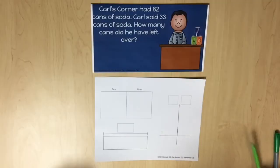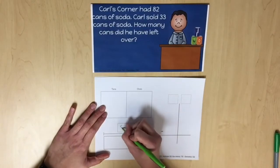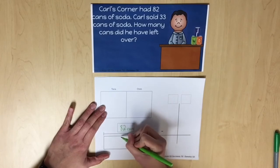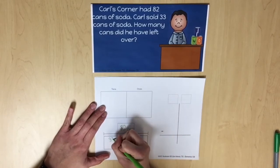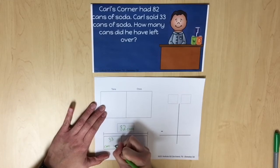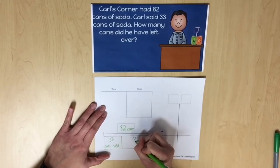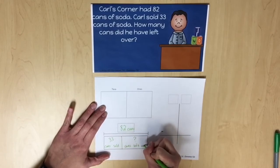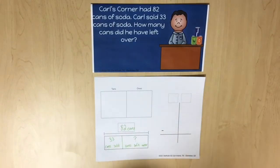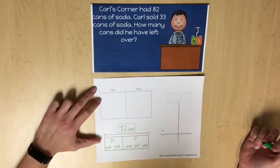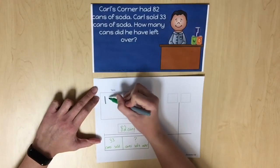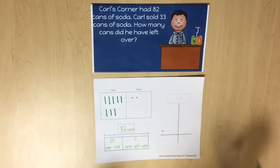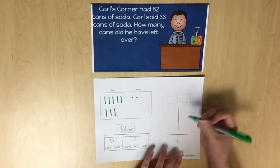First, the knowns and unknowns should be represented in the strip diagram. We know Carl started with 82 cans, he sold 33 cans, and we're trying to determine the number of cans he had left over. The starting amount of 82 should be represented on the place value chart. Finally, the 82 and 33 should be written in the standard algorithm.